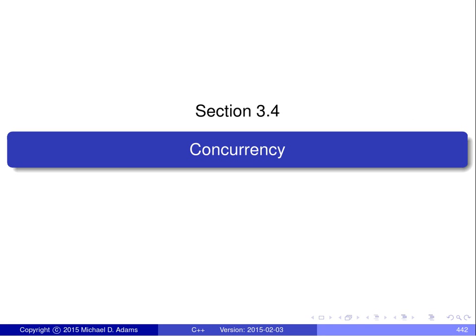In this part of the lecture series, we look at some of the concurrency features of the C++ programming language. We'll talk about things like memory consistency models, threads, thread management, sharing data, mutexes, condition variables, promises and futures, and atomics.